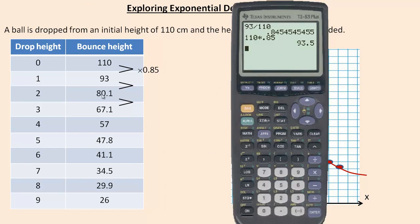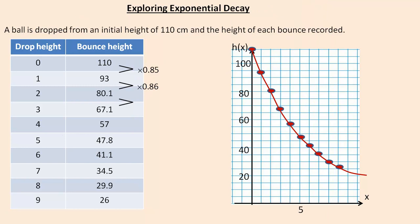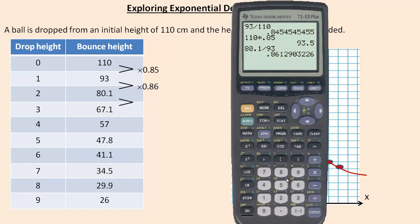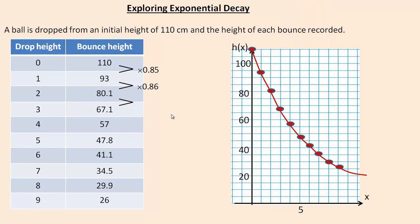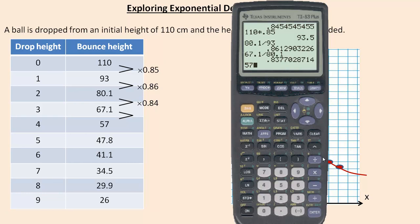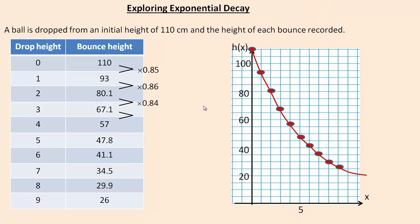Let's do the next one. What do I multiply 93 by to get 80.1? Let's divide the 80.1 by the 93. It's about 0.86, so this would be times 0.86. Let's do another one. What do we multiply the 80.1 by to make 67.1? So 67.1 divided by the bounce above it. It's about 0.84. And let's do another one. So let's go to the 57 divided by the 67.1. And we get about 0.85 again.